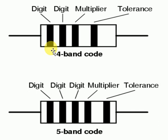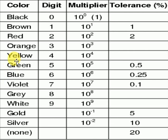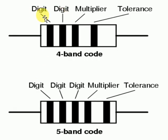For example, if the 3 bands are brown, red, and orange, the result is 12 × 10^3. The fourth band is the tolerance: gold = ±5%, silver = ±10%, none = ±20%, brown = ±1%, red = ±2%. For a 5-band code, the initial 3 bands are digits, then multiplier, then tolerance. The simple trick: the last band is always tolerance, the second last is multiplier, and the initial ones are digits.